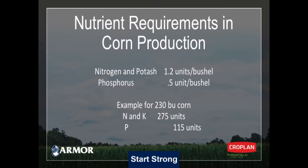In corn production, we think about potash and nitrogen as requiring 1.2 units of nutrient per bushel of yield goal — so 1.2 units of potash or nitrogen per bushel of yield goal. I'll put a slide in here that shows the requirements and an example of what that looks like in the corn plant.